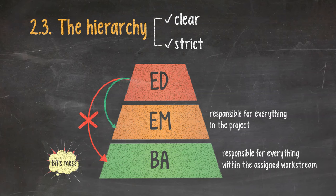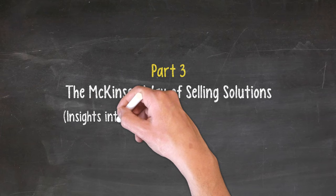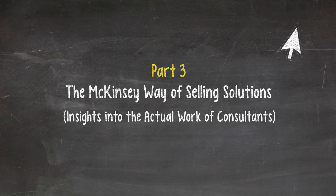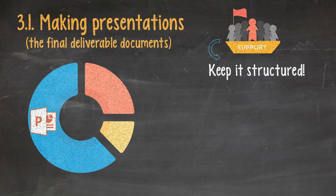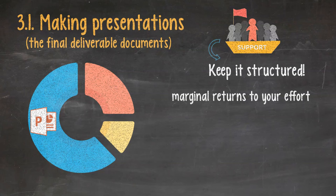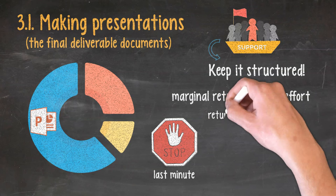Part three, the McKinsey way of selling solutions. In other words, insights into the actual work of consultants. Watch this video on what a consultant does in an actual project, then the insights from this part will be a lot easier to grasp. Now here are some of the highlights of a typical consultant's work and how to do them well. 3.1. Making presentations, aka the final deliverable documents. Most consultants spend a big portion of their time making presentations, often in PowerPoint. Utilize the support team. Keep it structured from top to bottom, from end to end. Note that there are diminishing marginal returns for your effort, meaning that the last miles toward perfection are always much harder than the beginning. So resist the temptation to tweak your presentation at the last minute. Try to assess its gain versus those of a good night's sleep for you and the supporting cast.